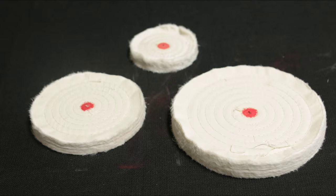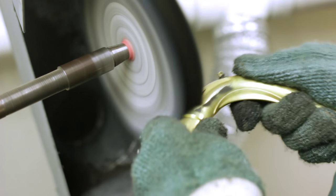The stitched muslin buffs are used for color buffing, especially on areas like pad cups and larger areas such as the body of the saxophone.